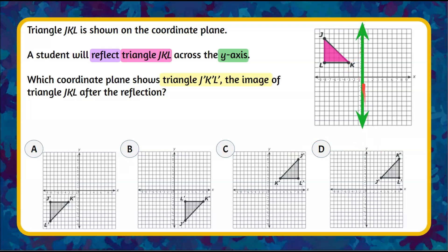When we reflect across the y-axis, every vertex is going to go the same distance that it is on the left side of this line of reflection to the right side.